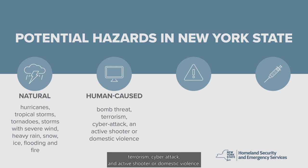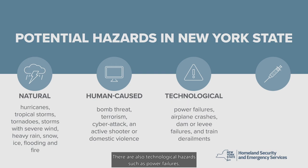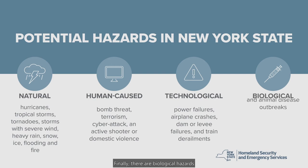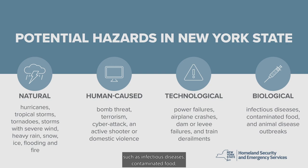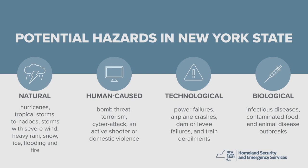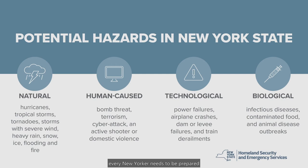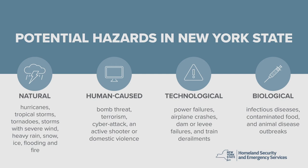Human-caused hazards such as a bomb threat, terrorism, cyber attack, an active shooter, or domestic violence. There are also technological hazards such as power failures, airplane crashes, dam or levee failures, and train derailments. Finally, there are biological hazards such as infectious diseases, contaminated food, and animal disease outbreaks. Given the wide array of threats which put our state at risk, every New Yorker needs to be prepared for any number of hazard types and situations where everyday needs may not be readily available.